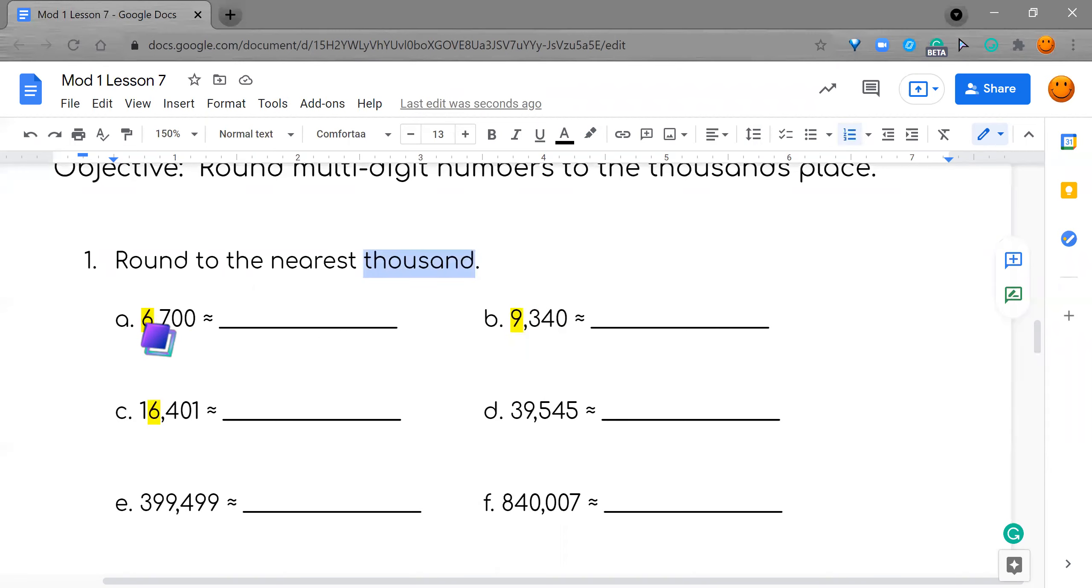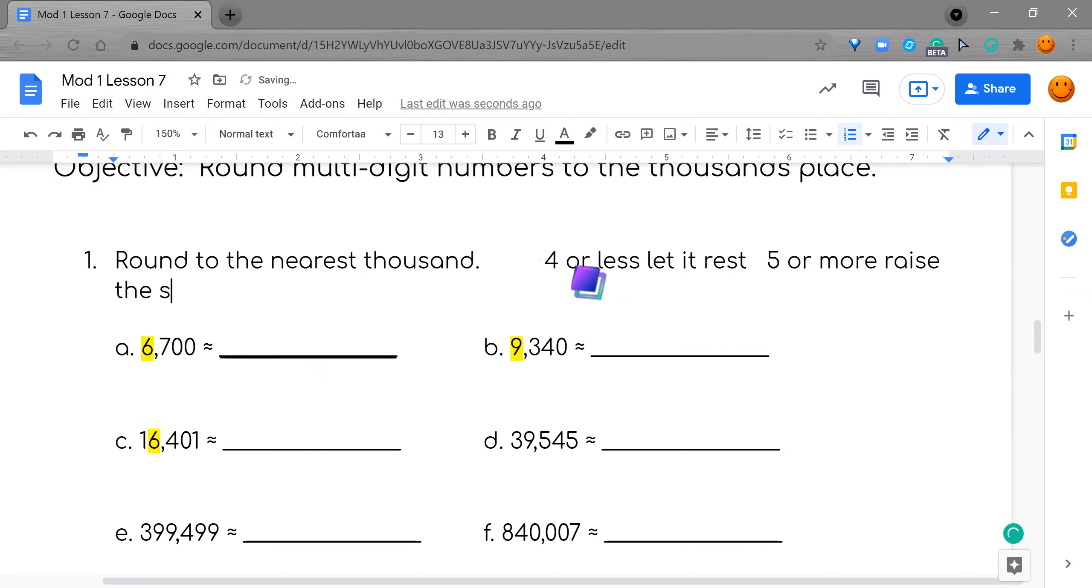What does the seven tell the six to do? You might not know this, and that's okay. We're going to practice. The rule of thumb that I like to go with is four or less, let it rest, five or more, raise the score. I did get this from a song from YouTube that I found called We Will Round You.